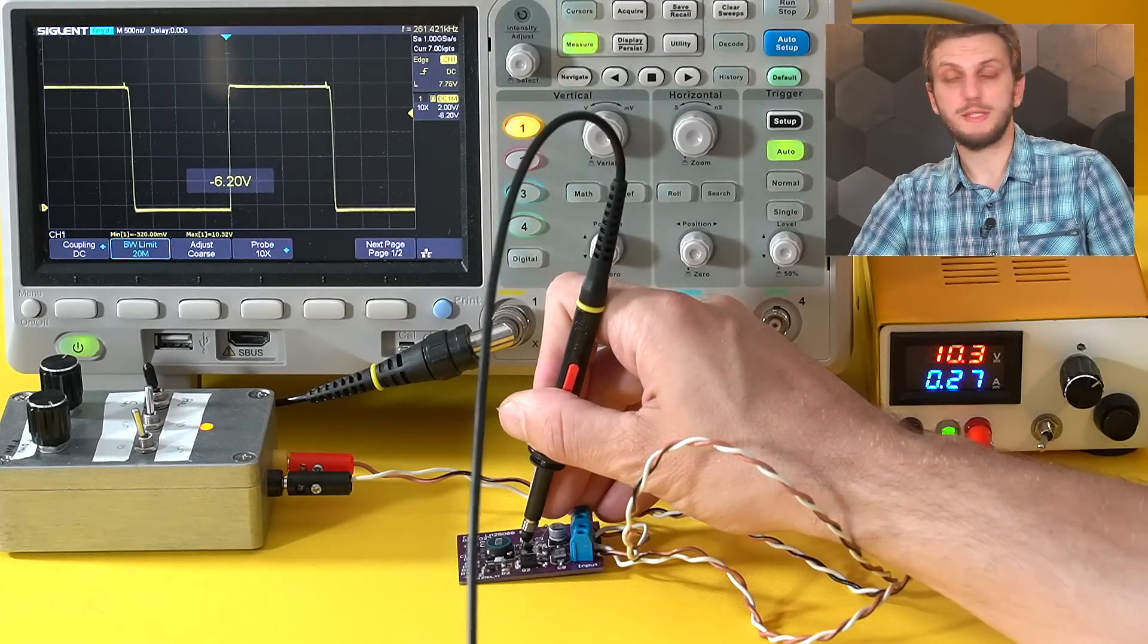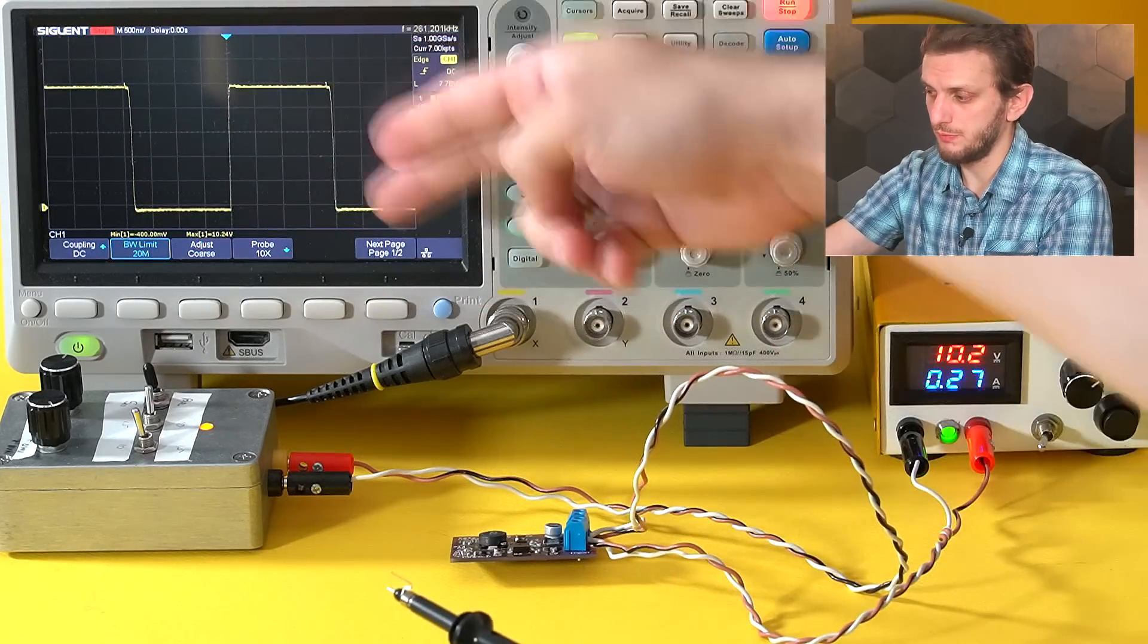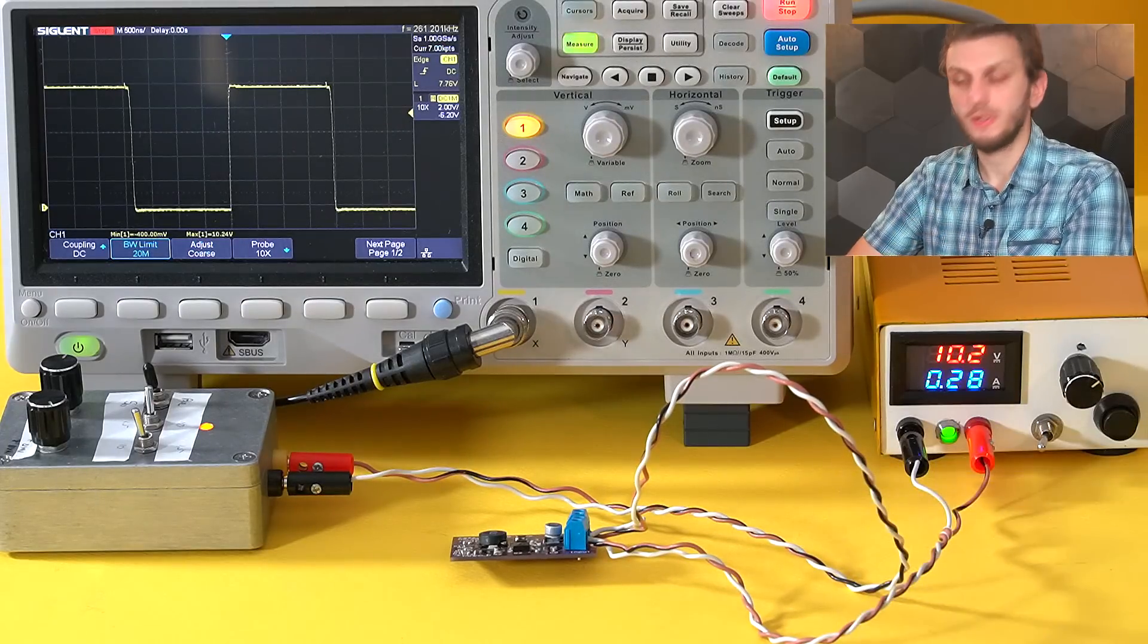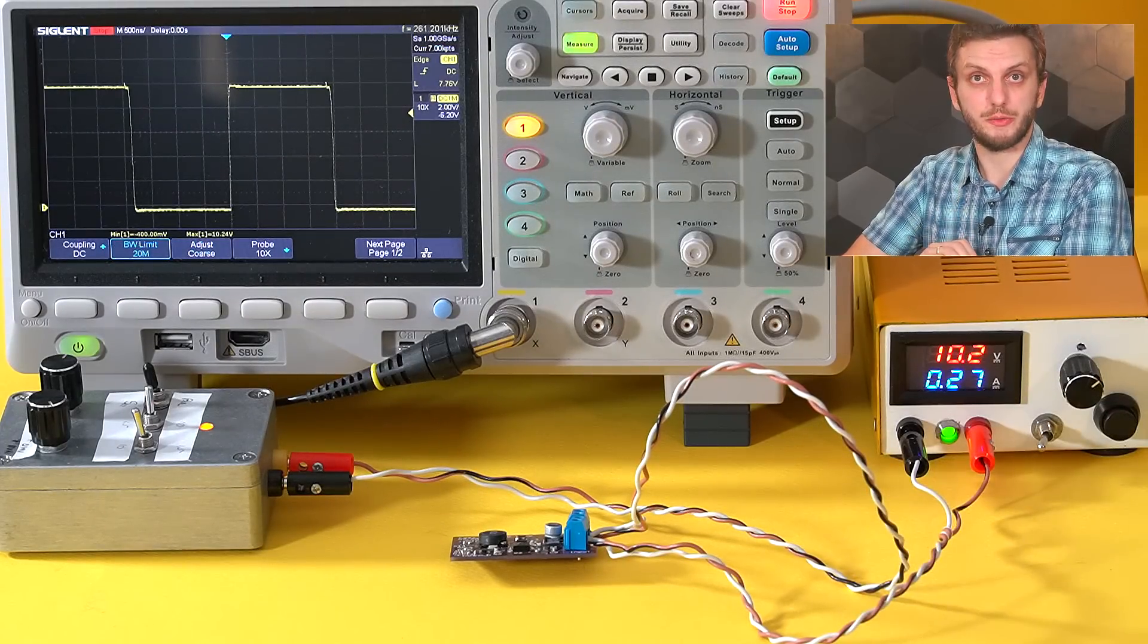And we have a look into the switching node of the circuit, we can see quite a nice waveform appearing. So we have our textbook square wave. But this isn't really what I want to show you.